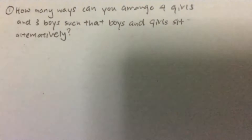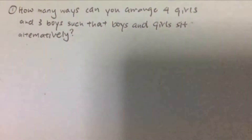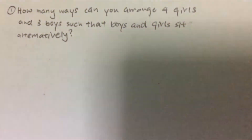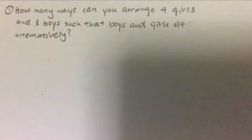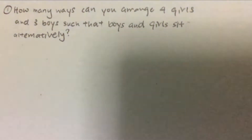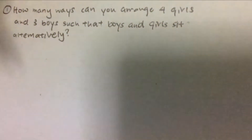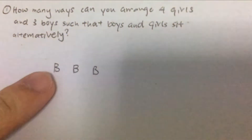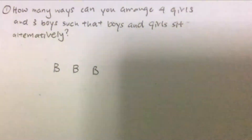The first question you may encounter is: how many ways can you arrange four girls and three boys such that boys and girls sit alternatively? In order to tackle this question, the first thing you need to do is find out which gender — girls or boys — is the least. In this case, the boys are fewer than the girls, so we will first arrange the boys in a row.